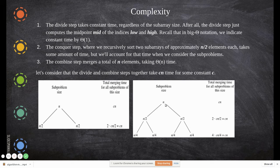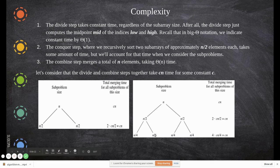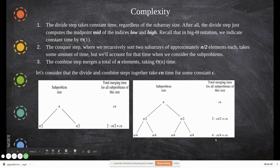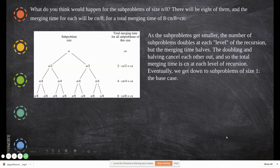Same way, if you take the problems, here it is further divided. When it is divided further, n by 4 by 4. So 4 times cn by 4. Four and four get cancelled, again you get cn.